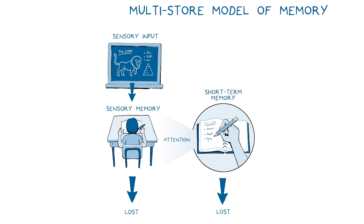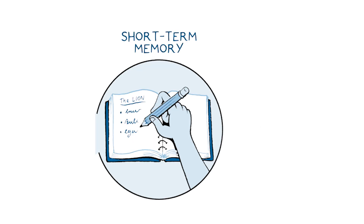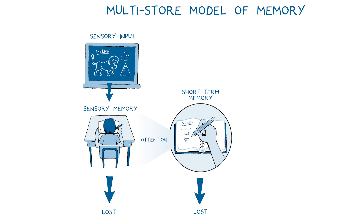Then, if attended to by each student, this information is moved into what's called short-term memory for processing. Short-term memory can be thought of as our immediate consciousness — where we do our thinking and reasoning. Short-term memory holds a limited amount of information for only short periods of time, usually 5 to 30 seconds. It is similar to what you might have heard before as working memory, and it can be overloaded. This overload diminishes student learning, something we'll discuss in later units.